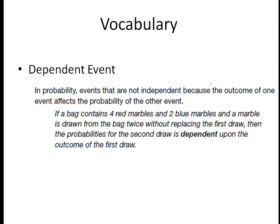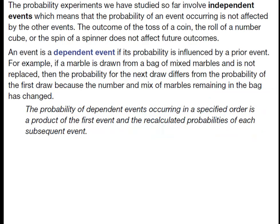For vocabulary, let's talk about what a dependent event is. The probabilities we've done in the past have been independent. In probability, events that are not independent means the outcome of one event affects the probability of the other event. For example, if I have a bag of marbles and I pull out a marble and don't put it back, then pull out another marble, my probability is going to be affected by the fact that one marble is now missing. So that second draw is dependent upon the outcome of the first draw — that's a dependent event. The probability experiments we've studied so far have been independent events; they're not affected by other events. Now we're going to deal with dependent events and probability that's influenced by a prior event.